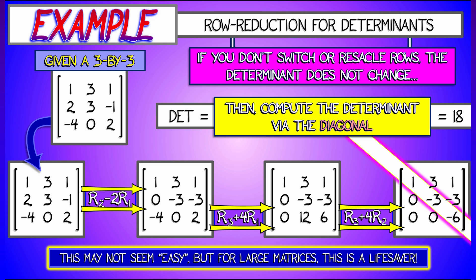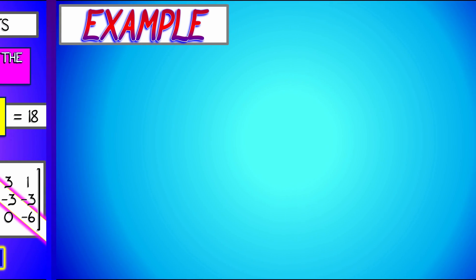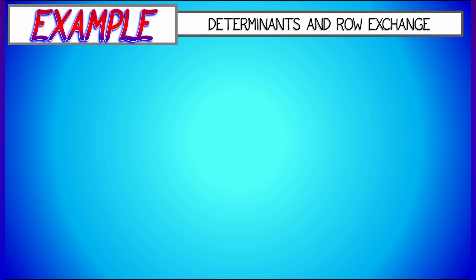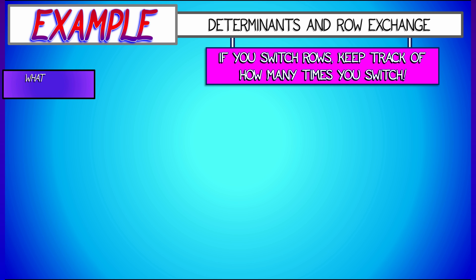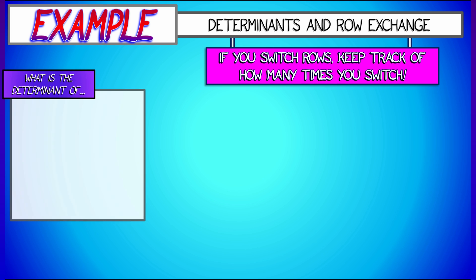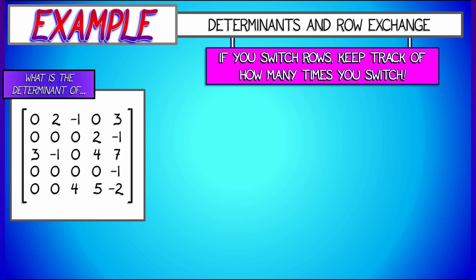For large matrices, that is a lifesaver. Let's take a look at a different example — a bigger example — where we wind up doing a lot of row switches. In that case, be really careful to keep track of how many times you do it.